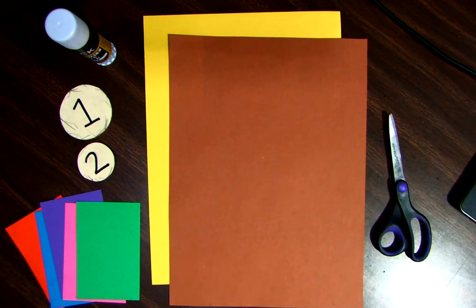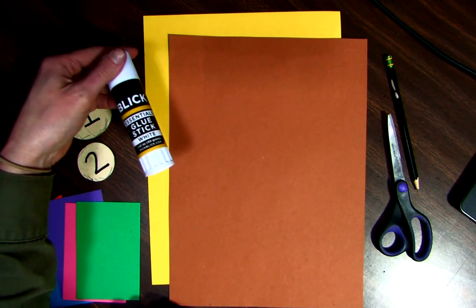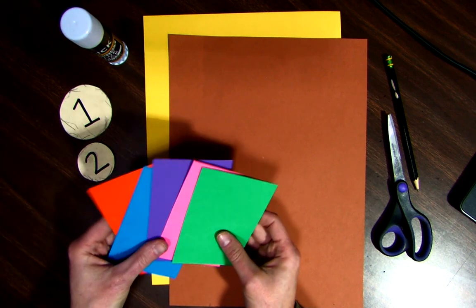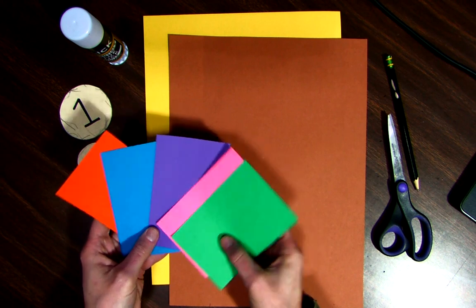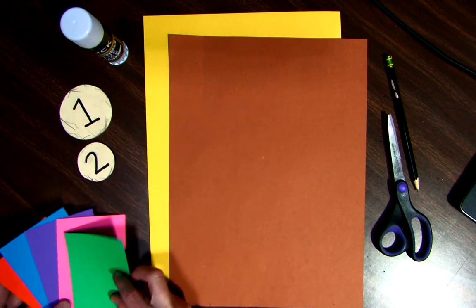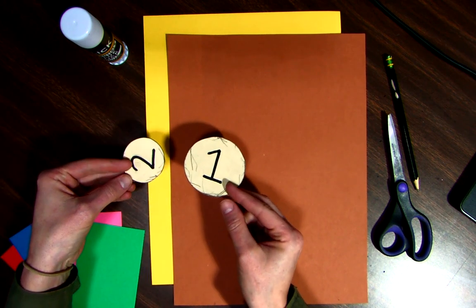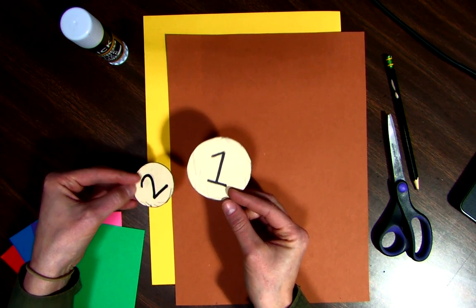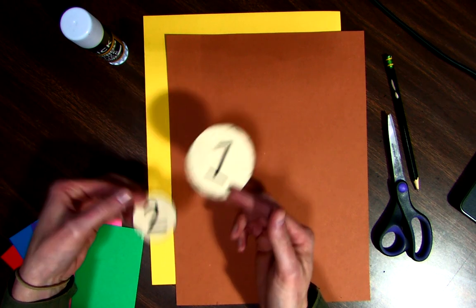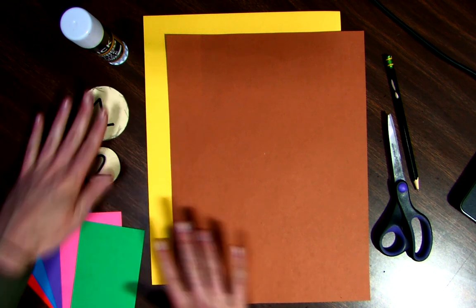You also will need a pencil and you will need glue. So you can either use a glue stick or a liquid glue, and then some other colored pieces of paper. Now, on your Schoology page, there is a stencil for two different sized circles. If you want to print that out and cut these circles out, you can. Or instead, just draw your own circles. We're going to do a bigger circle and a smaller circle and you can draw them to what size you want. You don't have to use the stencils.